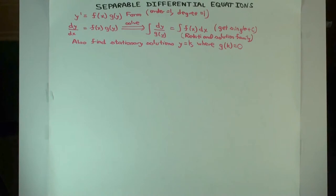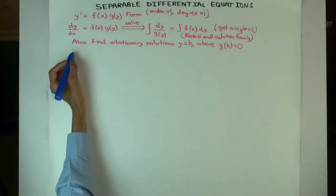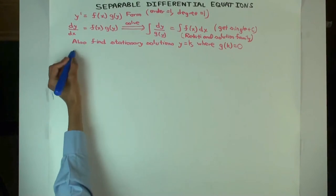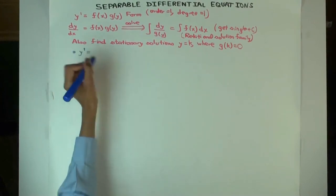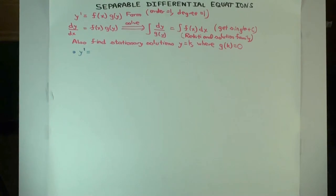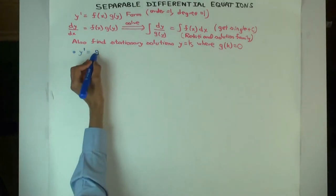I want to discuss two special situations. One is where you just have a function of y — f(x) is just 1 — so one special case is where y prime is just g(y).